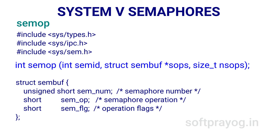There is another flag, SEM_UNDO. If SEM_UNDO is specified, the semaphore operation is undone when the process terminates. The kernel keeps an adjustment value for each process that does a semop on the semaphore. For each semop, the semop value is subtracted from the adjustment value. When the process terminates, the adjustment value is added to the semaphore value.